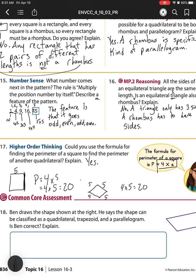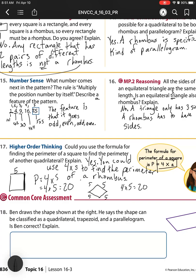So our answer is yes, you could use four times s to find the perimeter of a rhombus, because all rhombuses have equal sides.